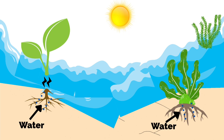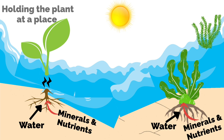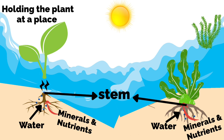Roots help plants to obtain water, minerals and nutrients, but more importantly, they perform the function of holding the plant in place. Generally, the size of the root is small, and the upper part is supported by a long tube-like stem.